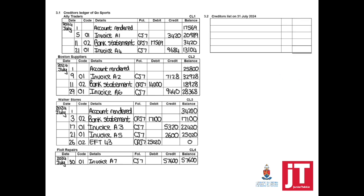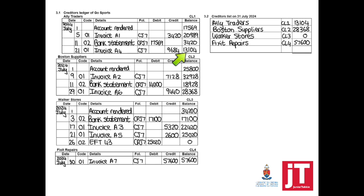Our next step is to complete the creditors list. The creditors list is a list of all balances at the end of the month — we simply list them and add them together. The new total is $99,072.